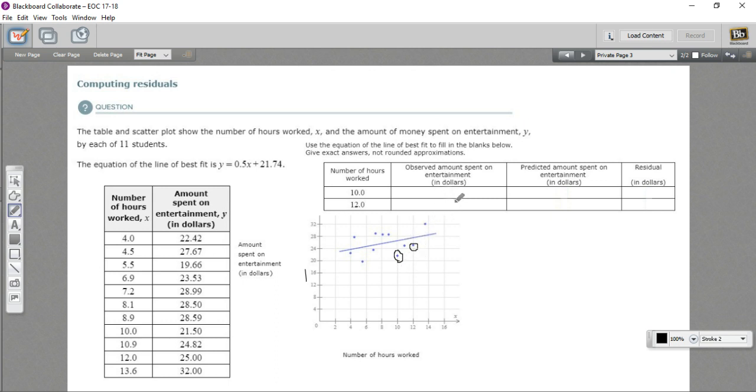So what we need to do is find that actual or observed, as they call it, amount spent on entertainment. So that would be the Y value of this point at 10 and this point at 12, and it's a little hard to read from the graph accurately. Luckily, they've provided us with this chart. So for this first part, all we have to do is take this value at 10 and write it in, 21.5. So 21.5 is how much the person who worked 10 hours spent on entertainment. For 12, it's 25.